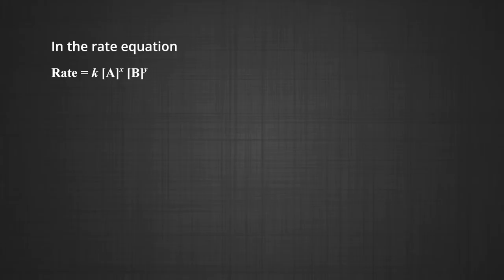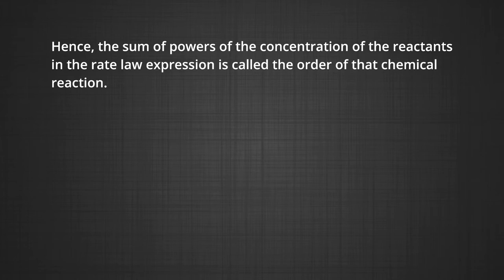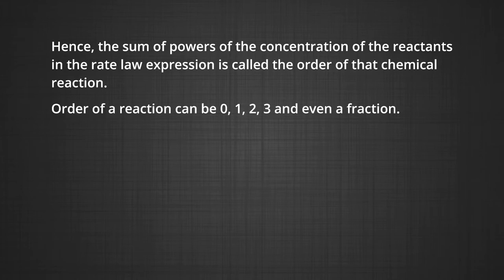Now let us discuss the order of the reaction. In the rate equation rate = k[A]^x [B]^y, x and y indicate how sensitive the rate is to the change in concentration of A and B. The sum of these exponents, x + y, gives the overall order of a reaction, whereas x and y represent the order with respect to reactants A and B respectively. Hence, the sum of the powers of the concentration of the reactants in the rate law expression is called the order of the chemical reaction. The order of a reaction can be 0, 1, 2, 3, and even a fraction.